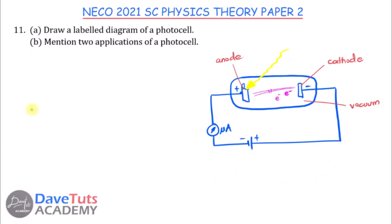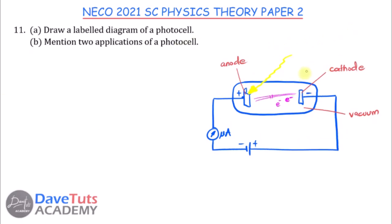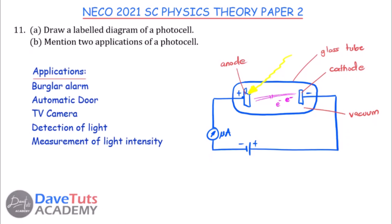When drawing, represent the anode and cathode as single lines within an evacuated glass tube — you don't need to be overly artistic. Applications of a photo cell include burglar alarms, automatic doors, TV cameras, detection of light, and measurement of light intensity.